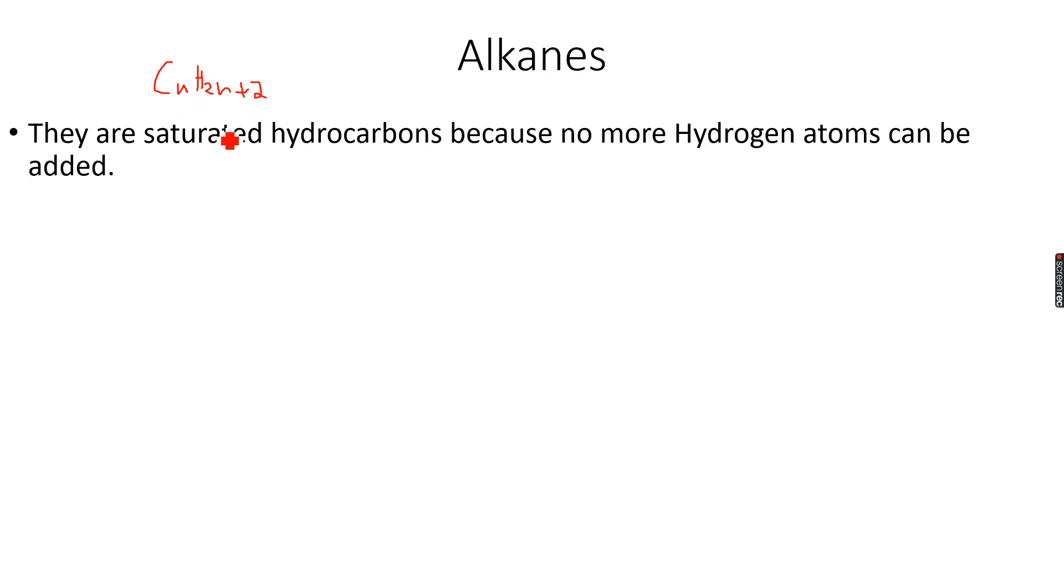So if we put n equals 1 and make the simplest alkane, it is methane. Now you can see that carbon has completed its valency. It has a valency of 4, it has 4 valence electrons and it has formed 4 bonds in total with hydrogen atoms. So you cannot add any other hydrogen atoms to this carbon because it has no spare electrons to form bonds with hydrogen atoms. So that's why they are called saturated.